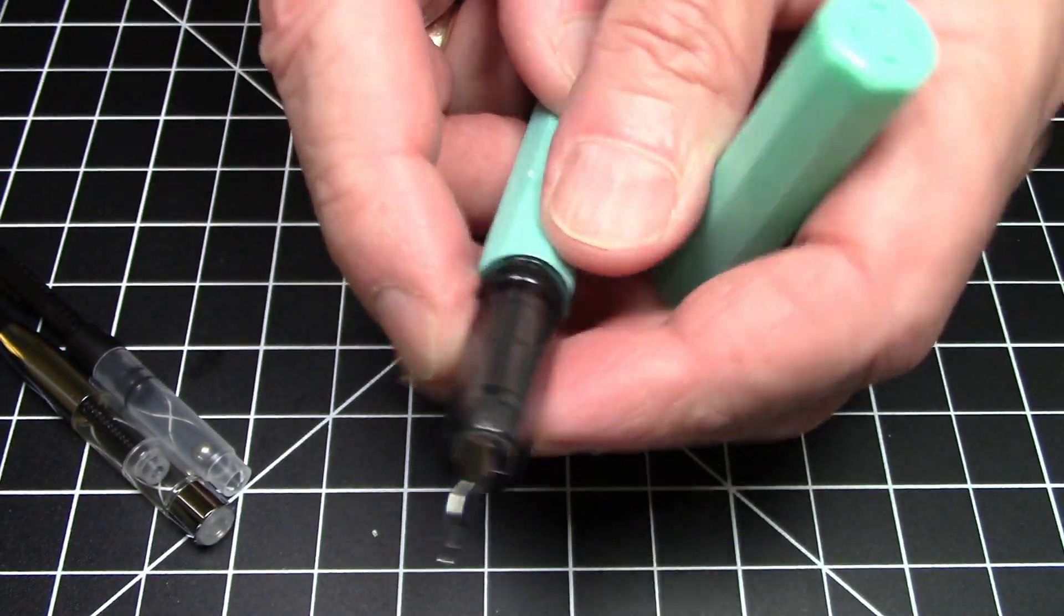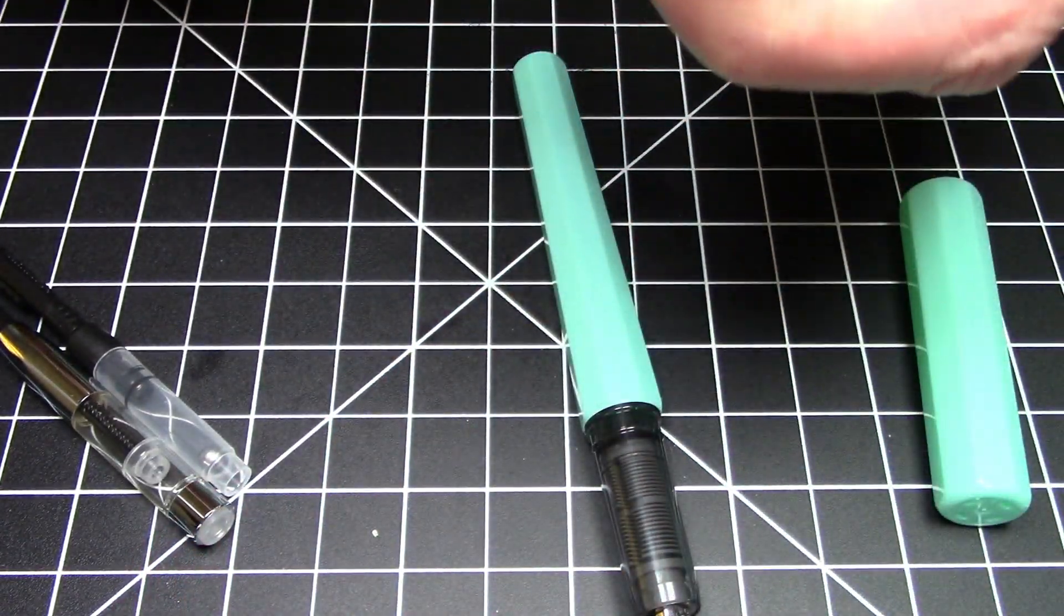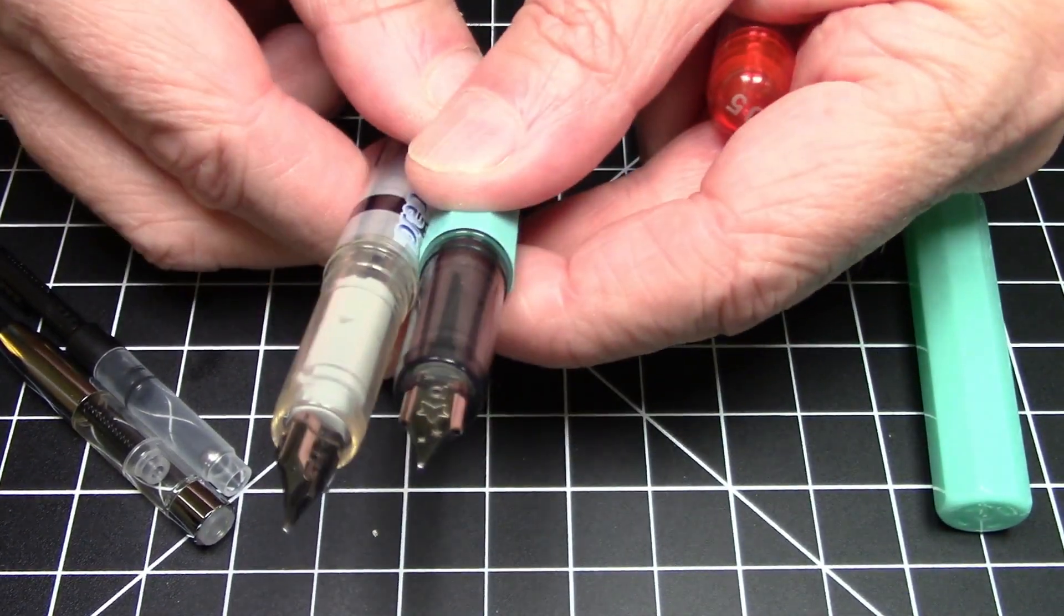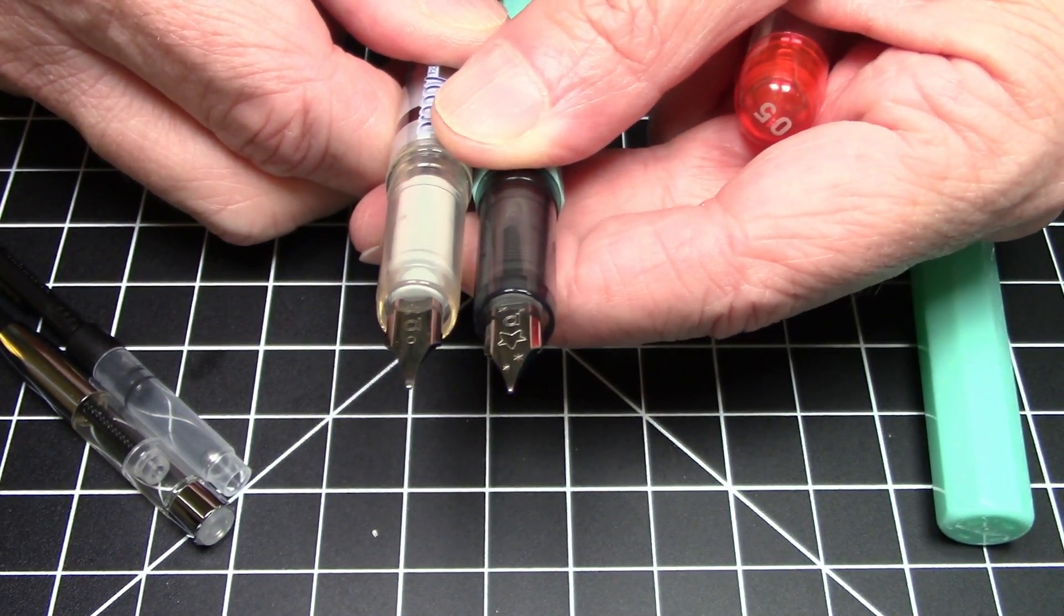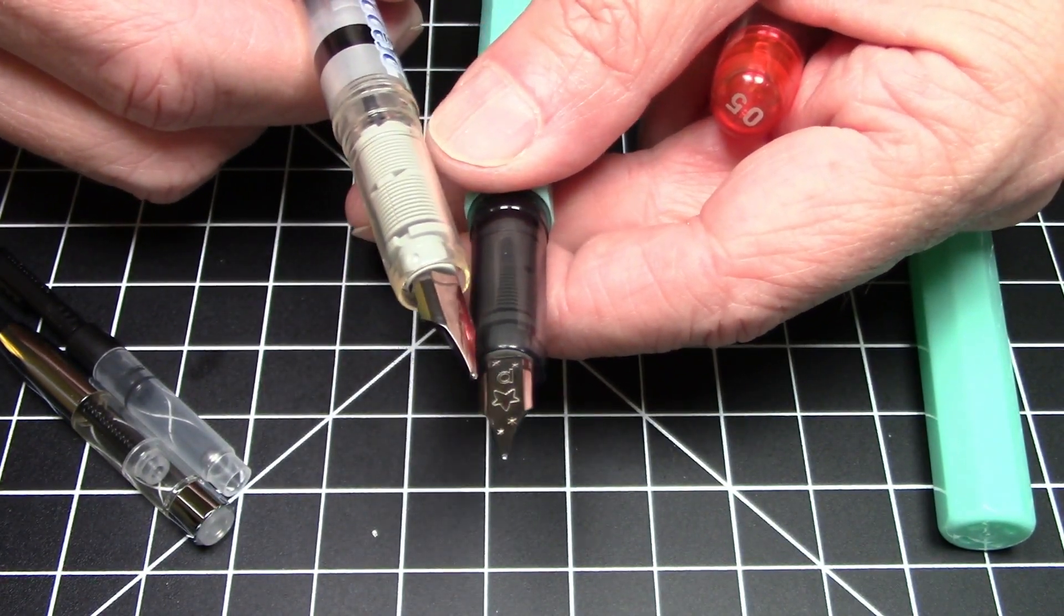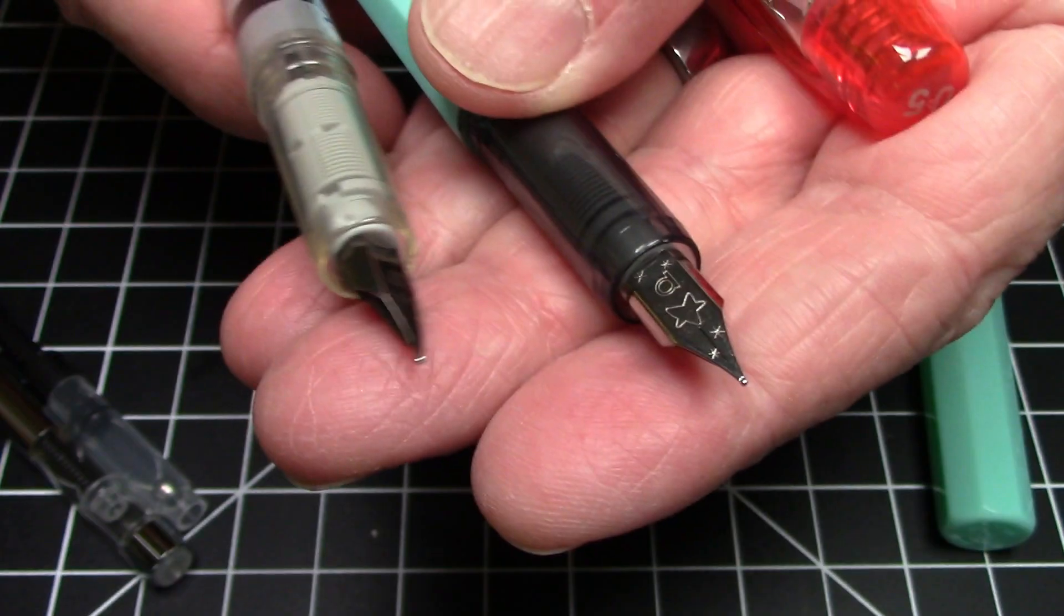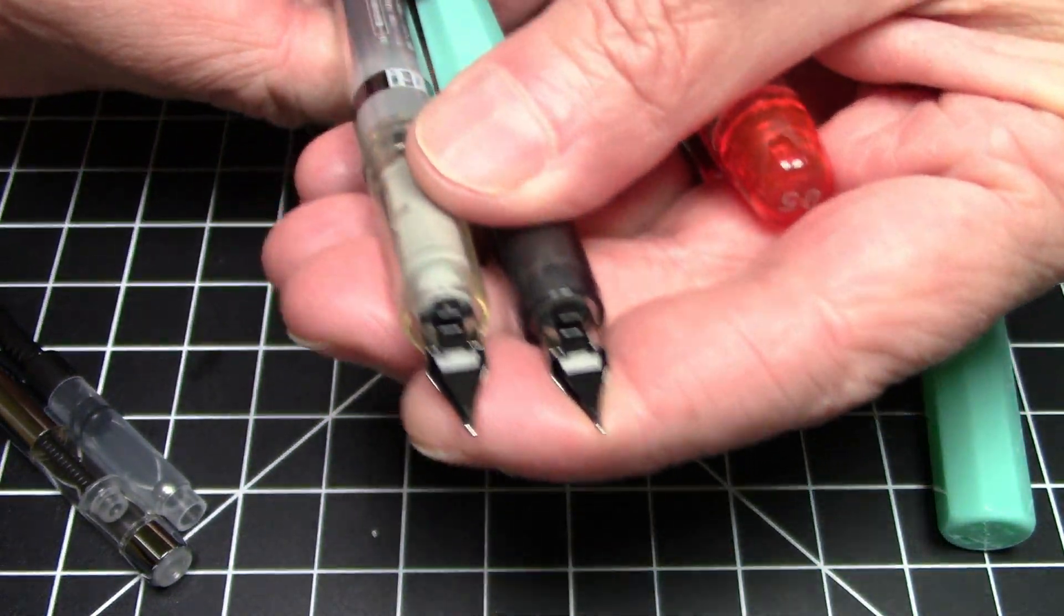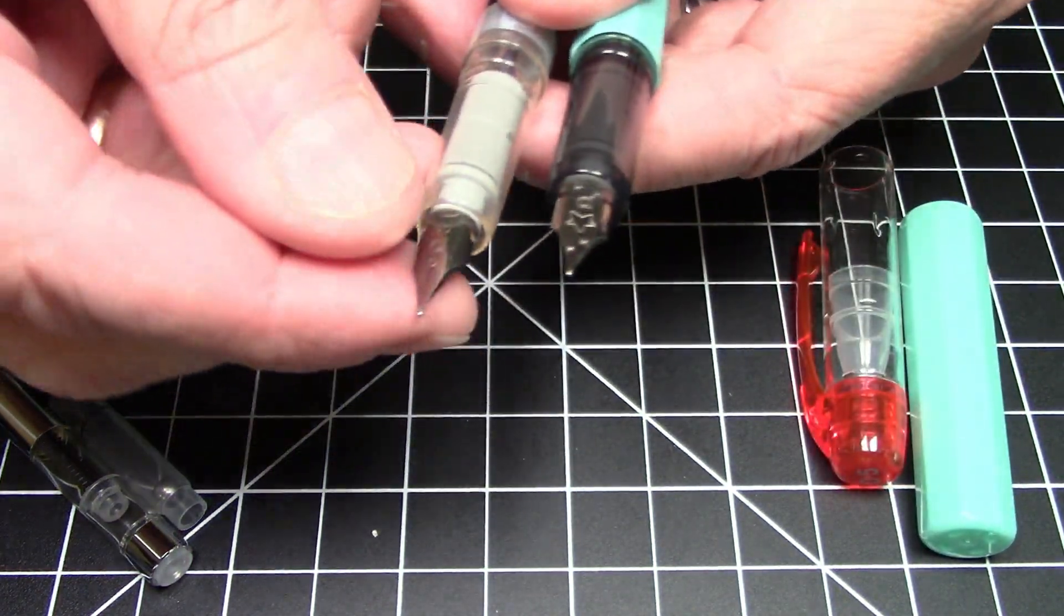And here we have a nib and a section that is very, very reminiscent of say a Platinum Preppy. So let's look at the Platinum Preppy and let's look at this pen. And are they the same? That is the question. The nib seems to be the same nib but with a little star decoration on it as opposed to the regular Platinum nib. But everything about the nib does seem to be the same.